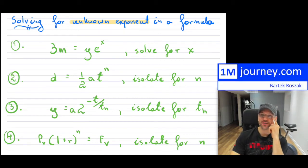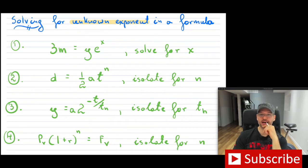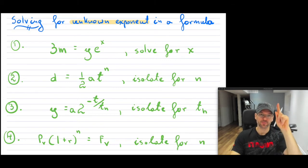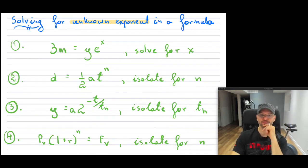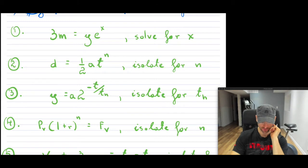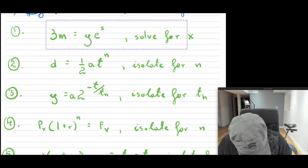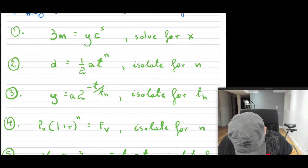Welcome back. In this video I'm going to go over solving for an unknown exponent, except now in a formula — where we do not know all the numerical values for all of these different variables. I encourage you to watch the video on solving for an unknown exponent, which was about finding numerical answers. Here I'm going to break down five examples and solve and isolate for whatever they're asking, using logs because our unknown is in the exponent. Here's example number one.